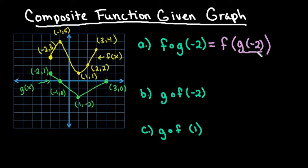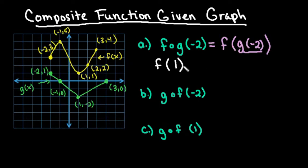So what is my y-coordinate when my g equation input is negative 2? My g equation is the green equation and my f equation is the yellow equation. We're going to find g of negative 2 and write its output. If I find g of negative 2, my output is 1. So f of g of negative 2 is really the same thing as f of 1. Now I go to my f equation and find my output when the input is 1, and my output is 1. That would be my final answer.